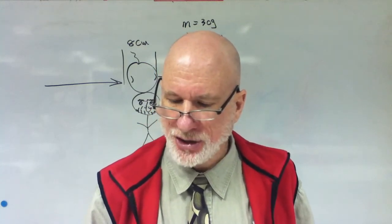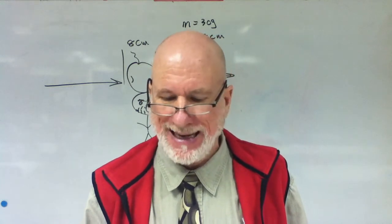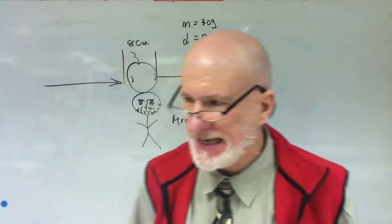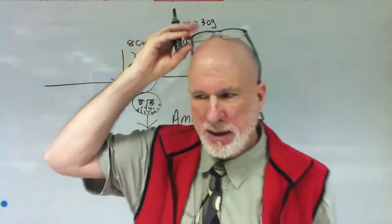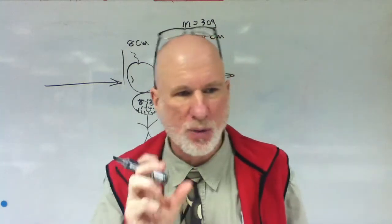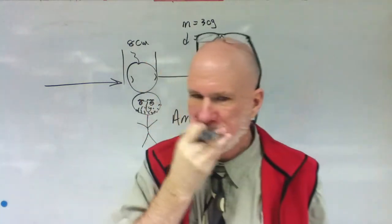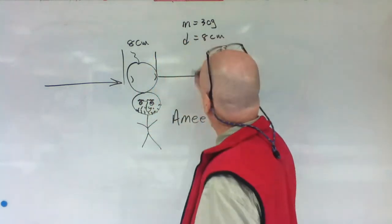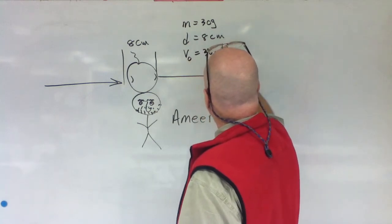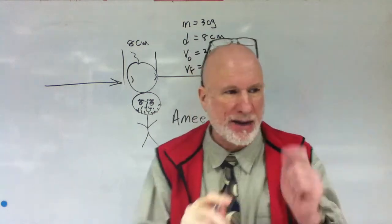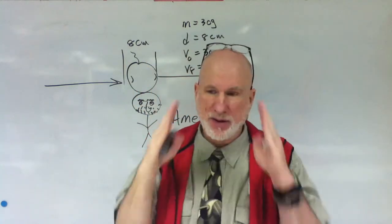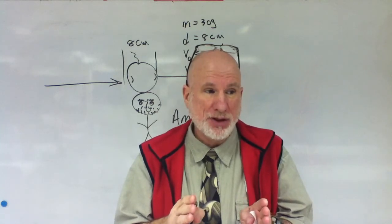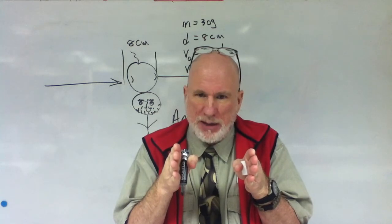So if the arrow enters the apple at 30 meters per second and leaves at 25 meters per second in the same direction, with what force has the apple resisted the arrow? So think about this. We're just talking about this 8 centimeters. That's all we're doing. What is the initial velocity of the arrow? 30 meters per second.